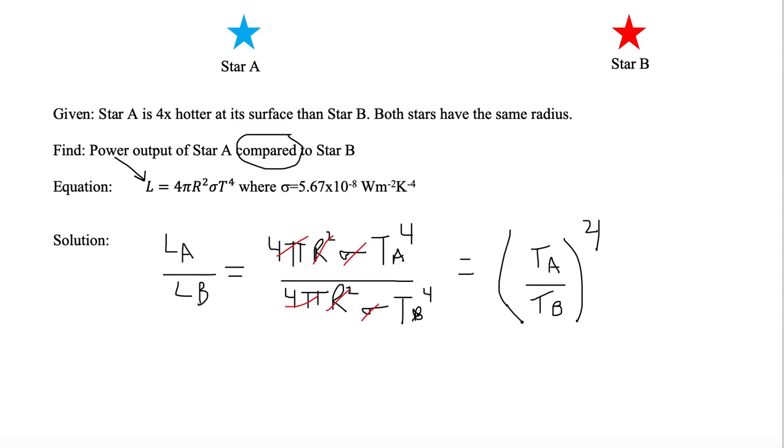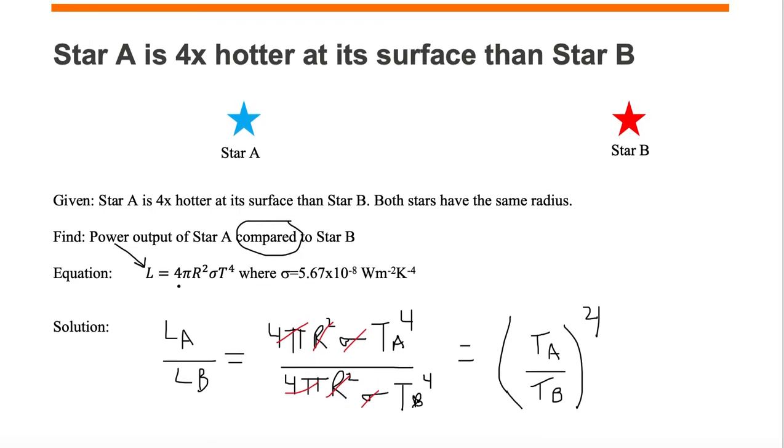Now we need to know TA to TB. We're given that star A is four times hotter at surface than star B. So the temperature of A is four times that of temperature B at its surface. So now all we need to do is substitute this in.